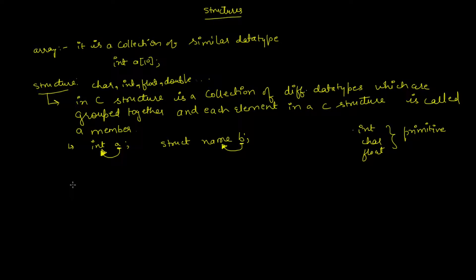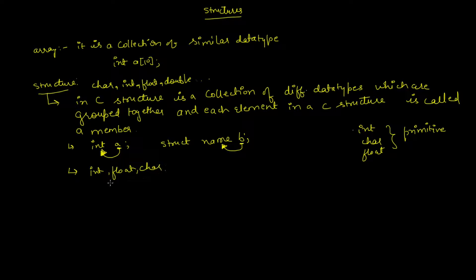Some basic rules in structures: first, if you want to access structure members in C, the structure variable should be declared. Second, many structure variables can be declared for any structure, and members will be allocated to each of them separately. It is also best practice to initialize a structure with a null declaration.